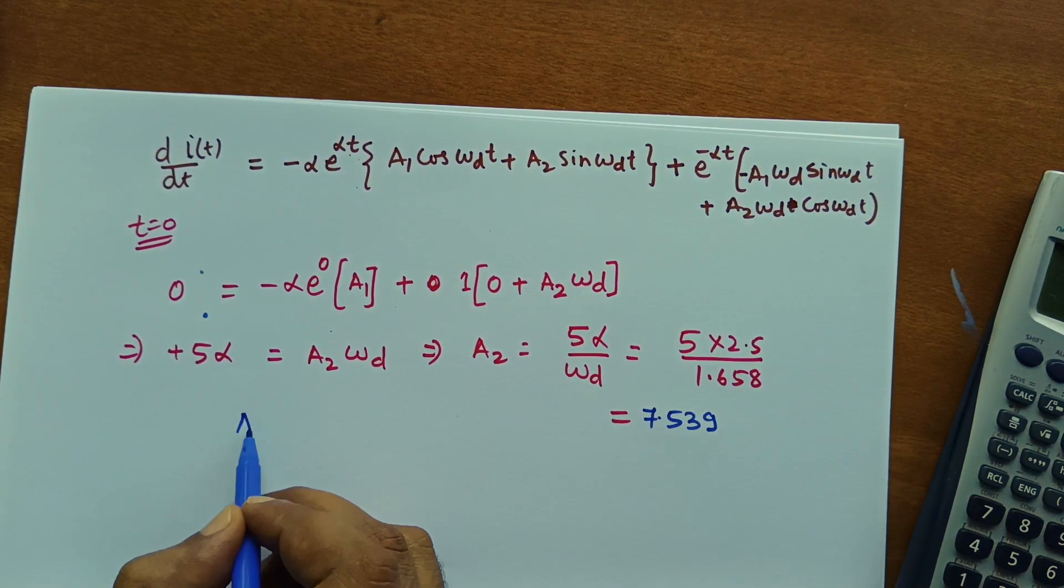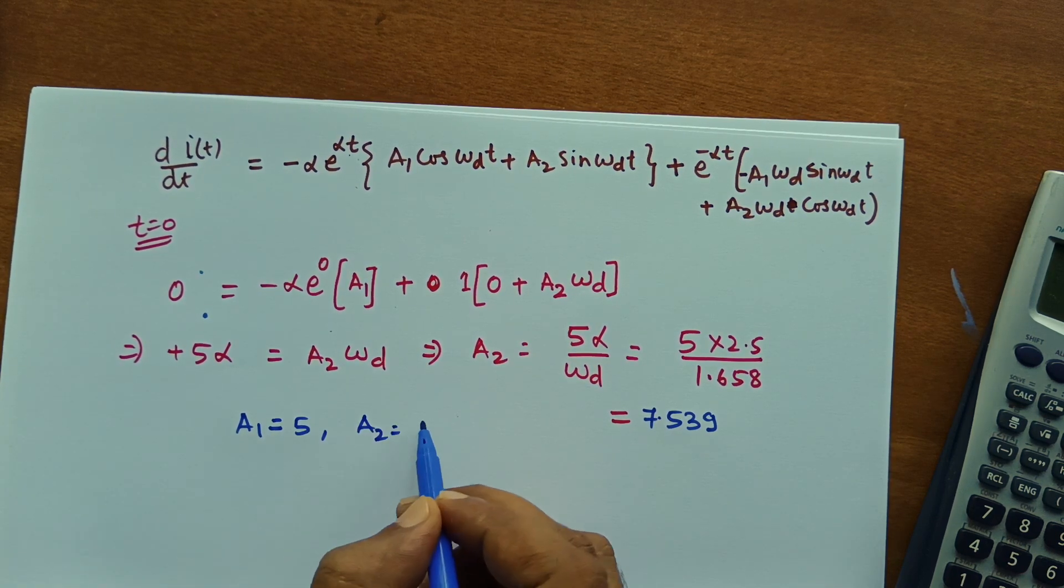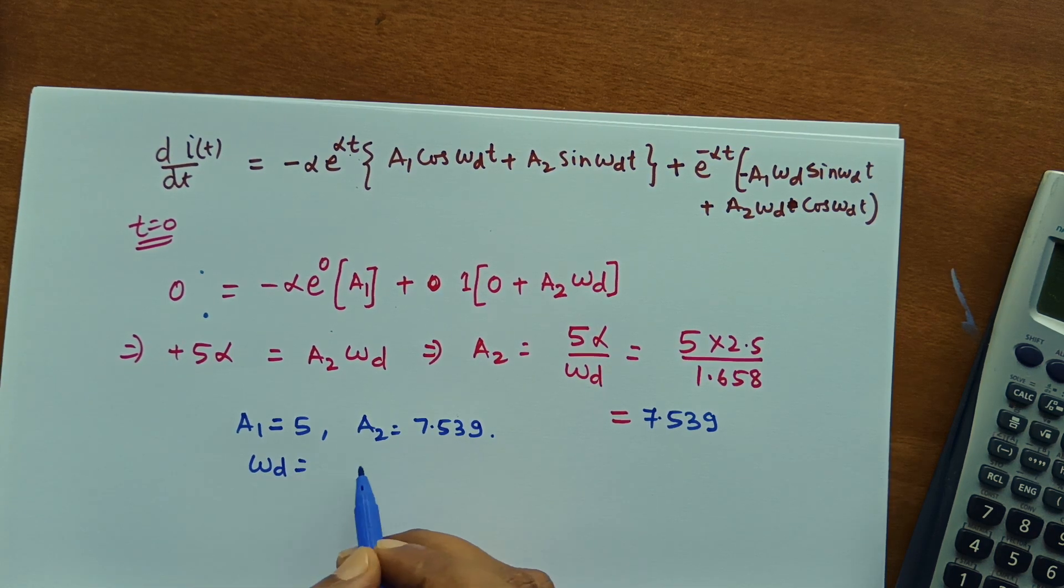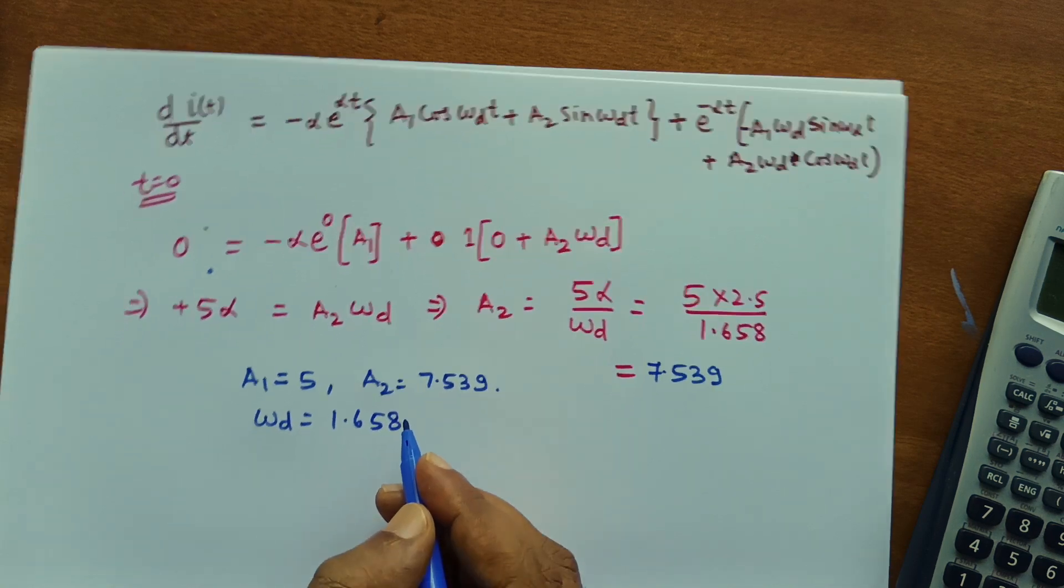This is our a2. So we have got a1 as 5. A2 as 7.539. Omega d as 1.658. So we can write the final solution.